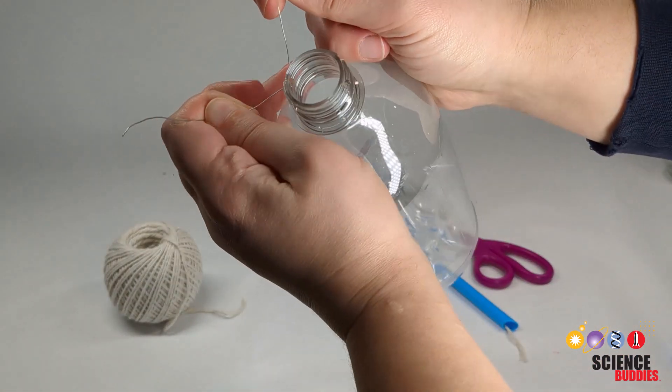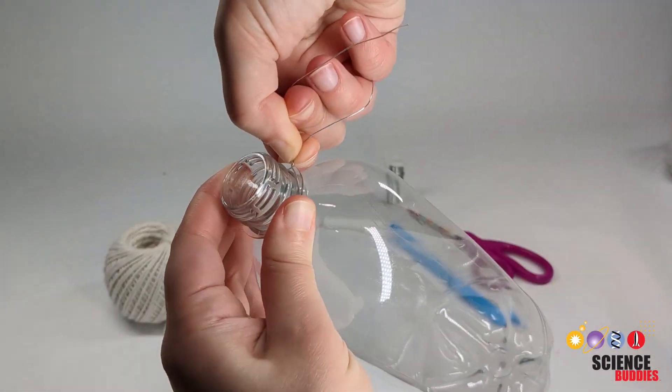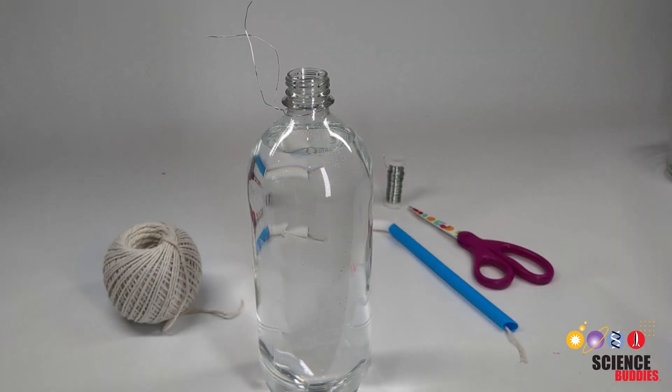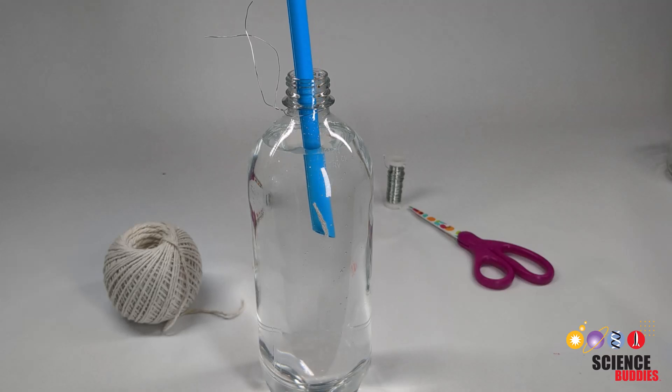Next, you'll uncap your bottle and add a second piece of wire around the mouth of the bottle to hold up the straw. Fill the bottle with water, then add your wick system into the bottle.